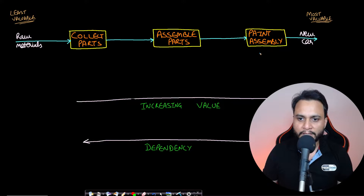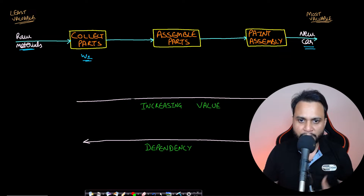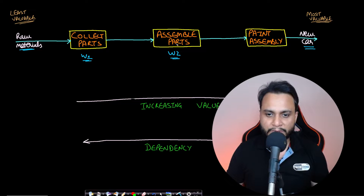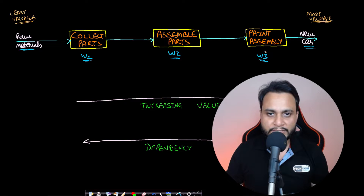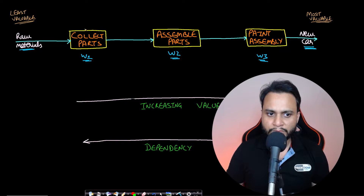We will take an example of a car manufacturing workshop. In a car manufacturing workshop there will be multiple smaller workshops where raw material comes in and a new car is created. Workshop number one is about collecting the parts — raw materials come from outside and all the parts get collected for making the car. These parts then go to workshop number two where everything gets assembled together to make the entire structure of the car. Once the structure is created, it is sent to the paint assembly, which is workshop number three, where the entire structure gets painted and the final finishing is done, and hence the new car is created.